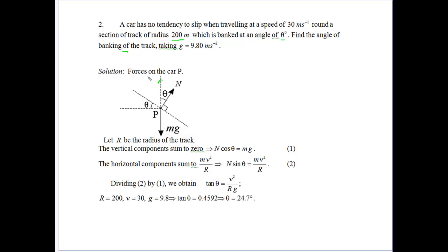So again, we set it up. We have n cos theta and n sin theta. We'll do mv squared on R that way. So n cos theta equals mass times gravity, and n sin theta equals mv squared on R. Again, we'll divide equation 2 by 1, because that eliminates the n for us. We get tan theta equals v squared on Rg. Tan theta gives us that number, which works out to be approximately 24.7 degrees.